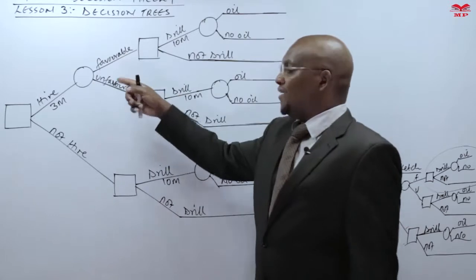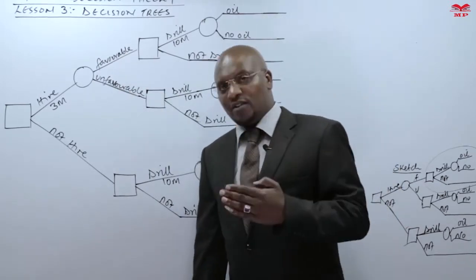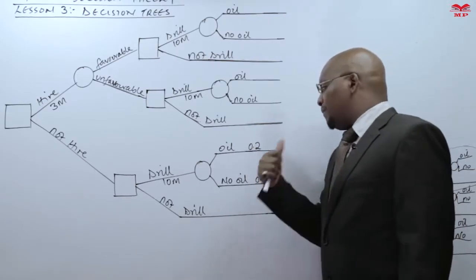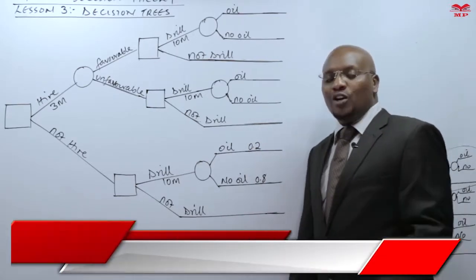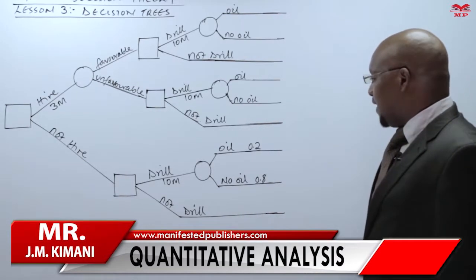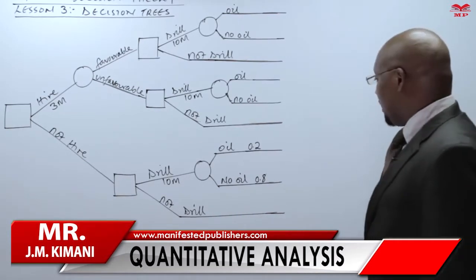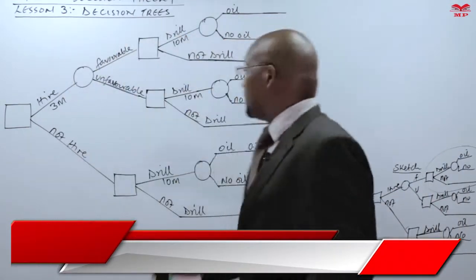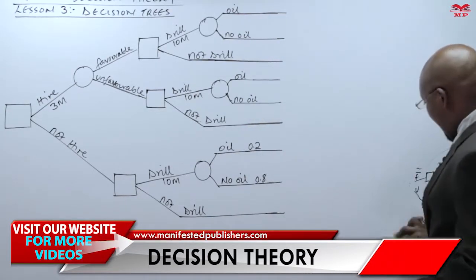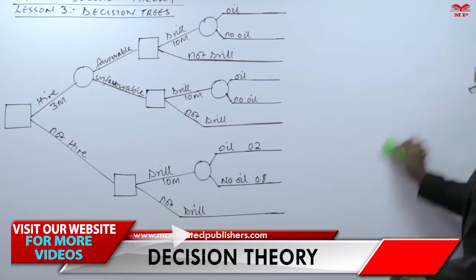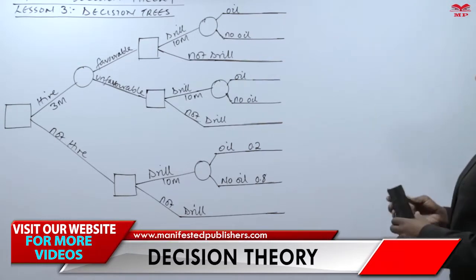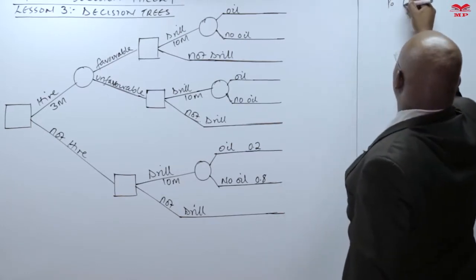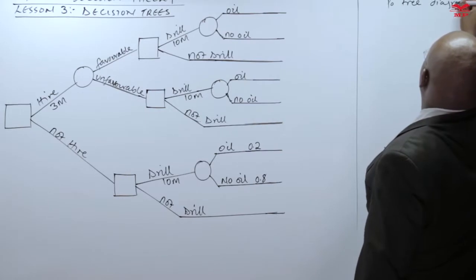Should we hire and obtain new information, we may end up changing our estimates — that calls for what you call revision of probabilities, under what I gave here as Bayes' theorem. So we are going to use what you call a probability tree diagram in determining this revision of probabilities.